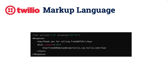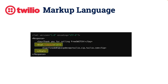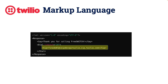Let's take a look at a simple TWIML script. The first part of the code plays a message: 'Thank you for calling FreeSwitch.' This message will be played to the caller as soon as the call is answered. After the message, the dial tag instructs Twilio to forward the call, with a timeout of 20 seconds.